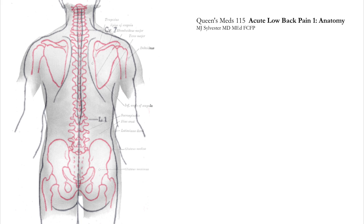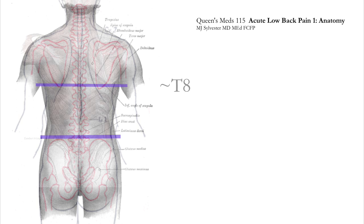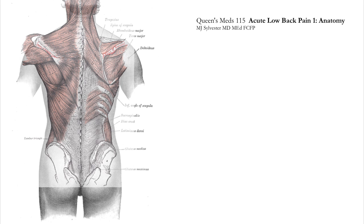Draw a line between the top of the iliac crests and you'll be at about the level of L4. If you draw an imaginary line between the inferior tips of the angle of the scapula, you'll be around the level of T8. And of course the bony anatomy is covered by layers and layers of soft tissue, ligament, muscle, and tendon.